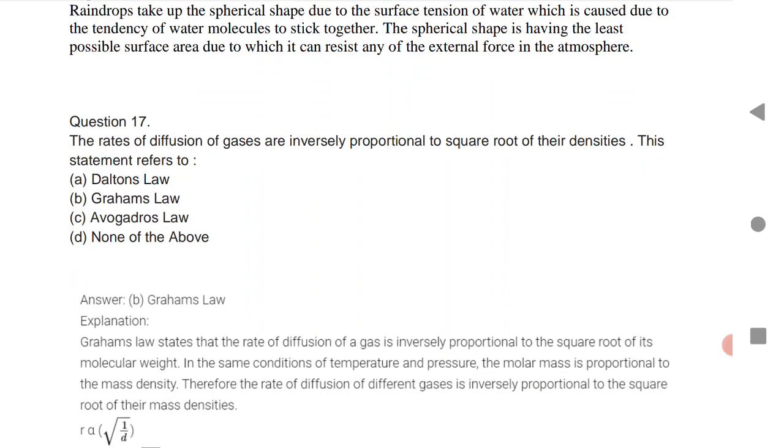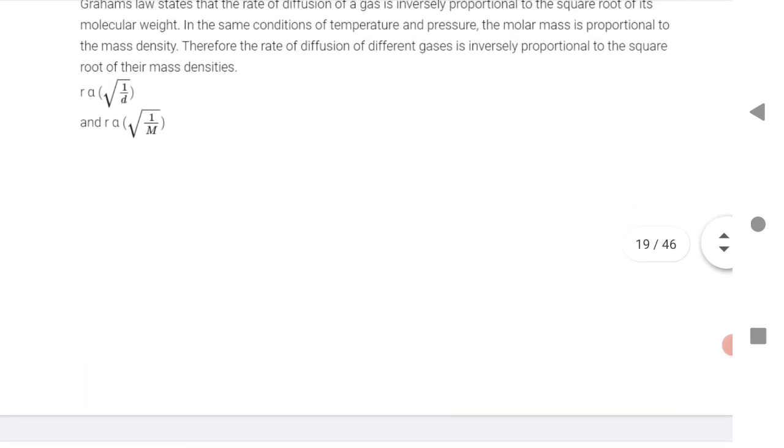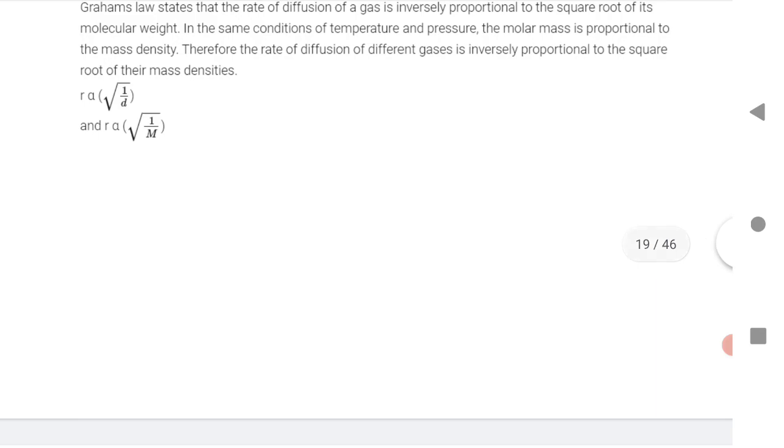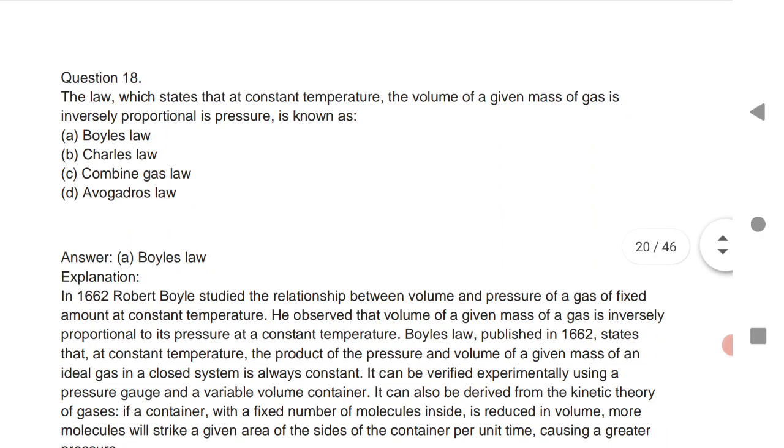Next is: the rate of diffusion of gases is inversely proportional to the square root of the density. This statement is given by Graham's law. Rate is inversely proportional to 1 by square root of d, and rate is inversely proportional to 1 by square root of M. This is the formula for Graham's law.